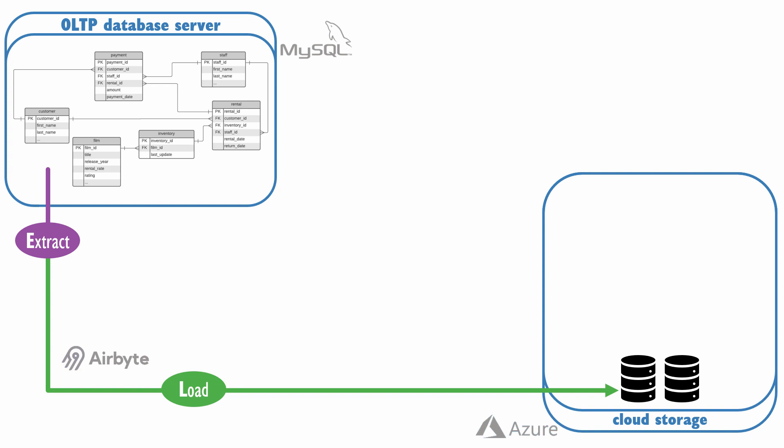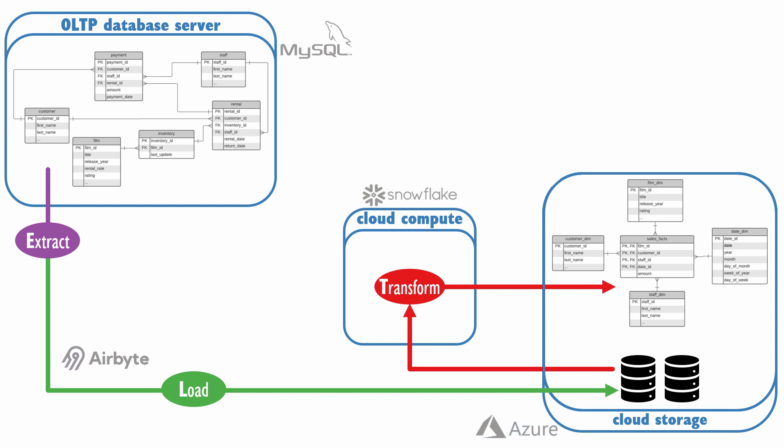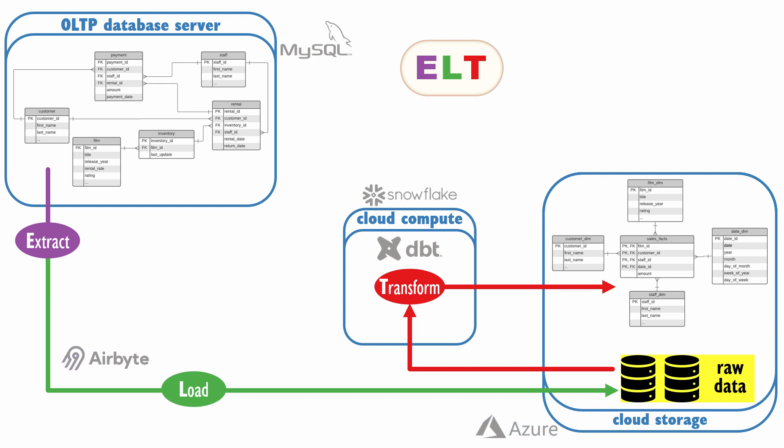We spin up a highly scalable Snowflake compute cluster and use it to transform the source data for our fact and dimension tables. This step is handled by another new breed of tools, like DBT, which transforms data that has already been loaded into your warehouse. Since transformations occur after the extraction and loading steps, the new acronym is ELT. Unlike the traditional method where staging data is ephemeral, storing data in the cloud is significantly cheaper, so the staging data can be retained for analyses that require raw data.